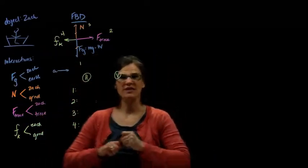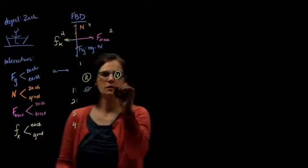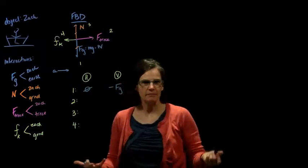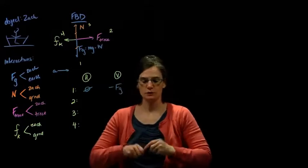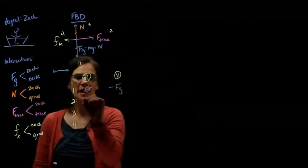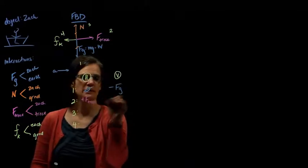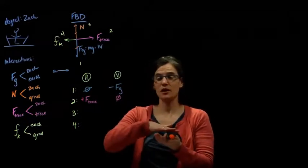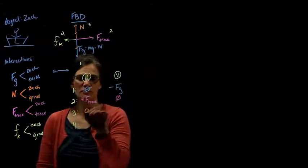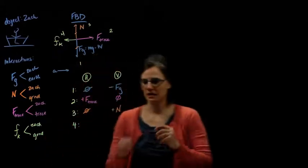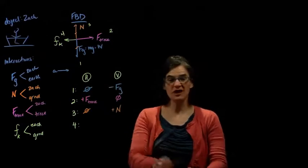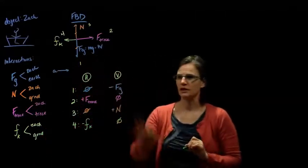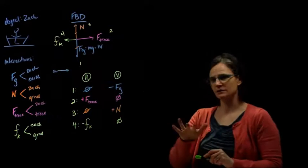Force one is our force of gravity — it points straight down, nothing horizontally; it's negative in the vertical direction with magnitude equal to the force of gravity. Force two is the force Therese exerts — she pushes to the right, so that's a positive horizontal force, nothing vertically. The normal force is in the upward direction — positive and vertical. Force four is our frictional force — it points to the left, it's kinetic friction, nothing in the vertical direction. We've now identified our forces in the horizontal and vertical directions.